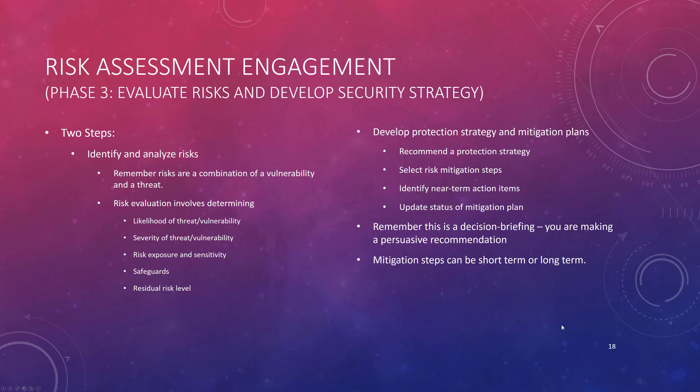Welcome back. This is going to be the fourth of six videos looking at Chapter 9 from Wheeler's most excellent textbook, Security Risk Management. What we're going to do here is really two things: finish up looking at the Octave Allegro model, and then leap into writing that risk assessment report. We've just got one slide.